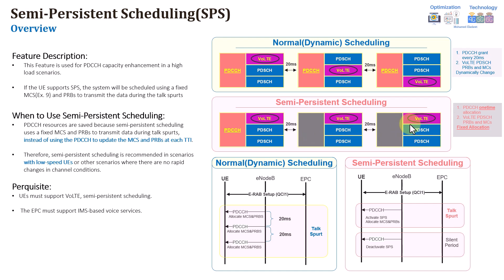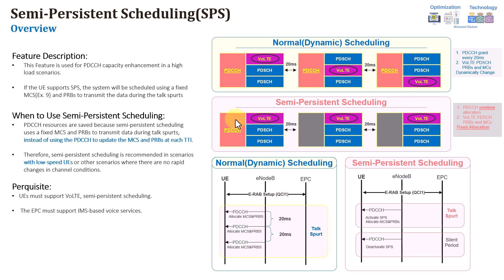The main drawback here is that the allocation of scheduling information — MCS and PRBs — remains the same throughout the entire call. This can cause problems in high-speed scenarios where the user is moving fast and there is high variation in radio conditions. This might cause issues especially if the user moves from a good radio condition area to a poor radio condition area, potentially increasing silent calls, drops, or packet loss.